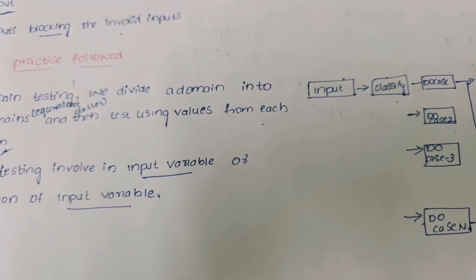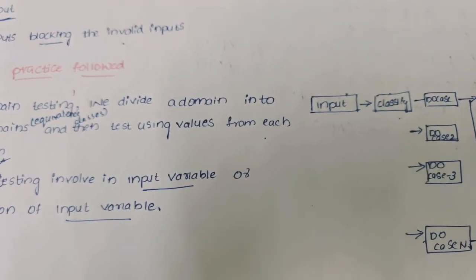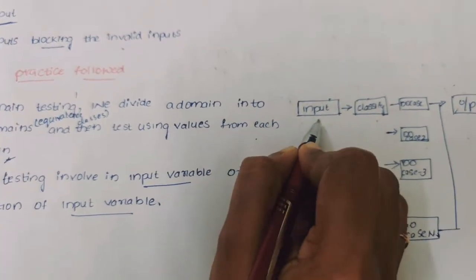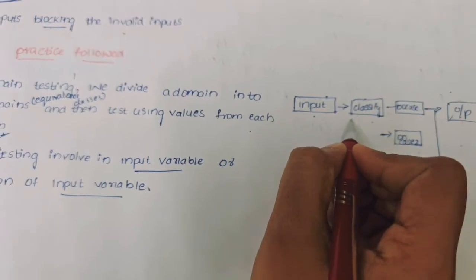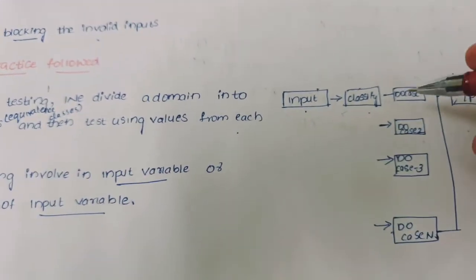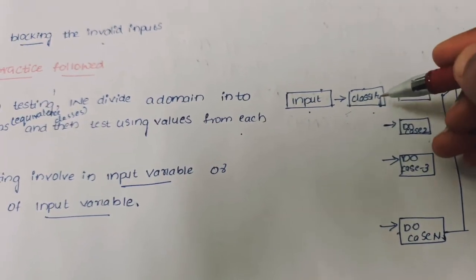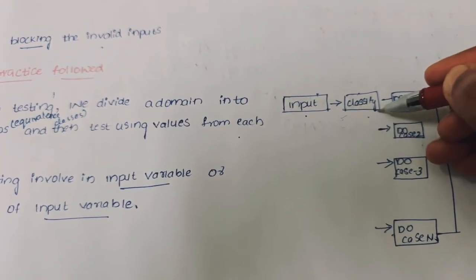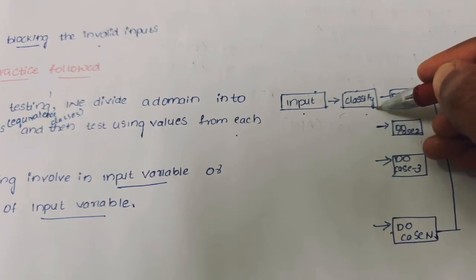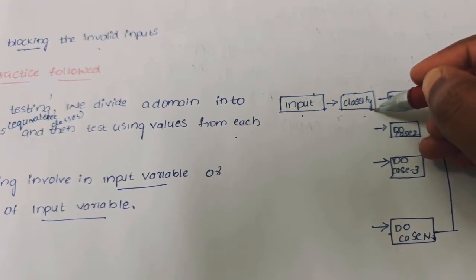The general practice followed in domain testing: First, inputs can be classified. There might be different types of inputs like alphabets, numerical, or anything else. Then, whatever input we have classified, we have to test each and every case more than one time.